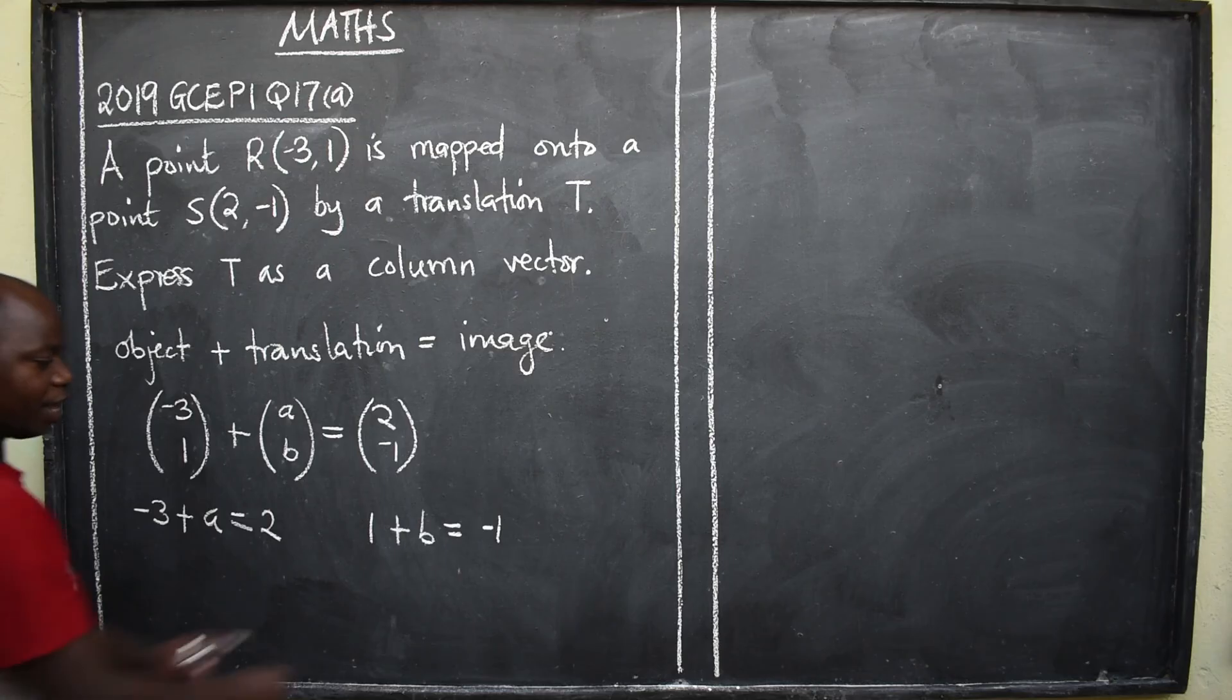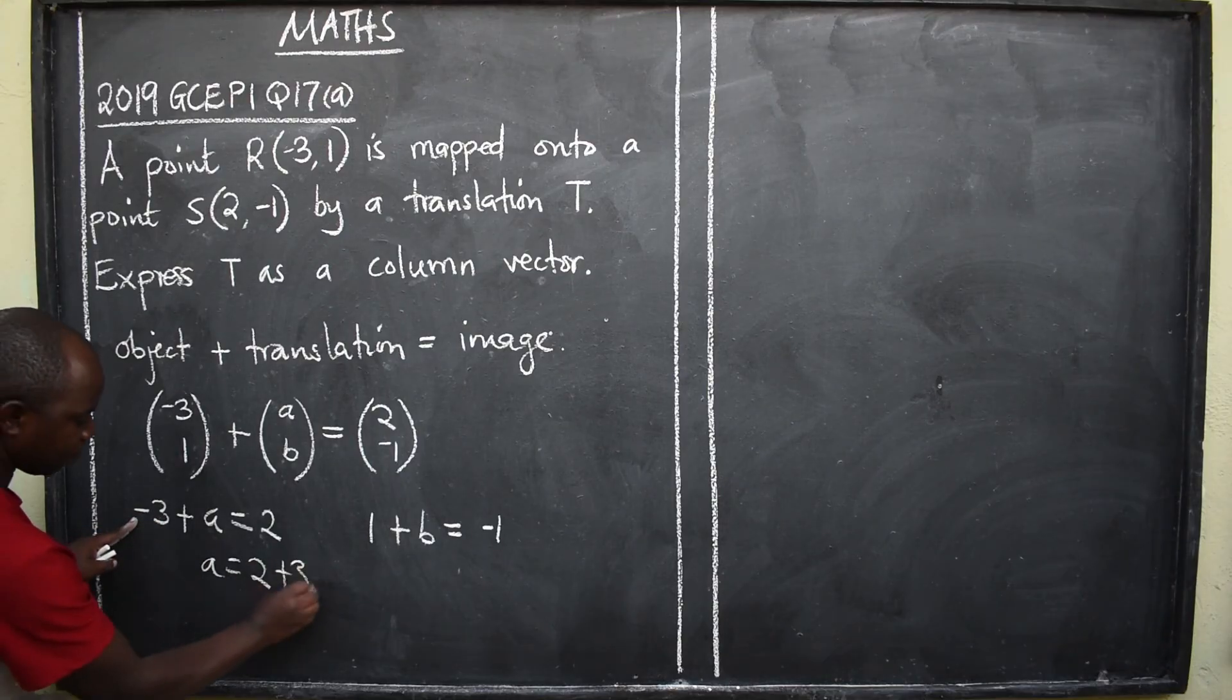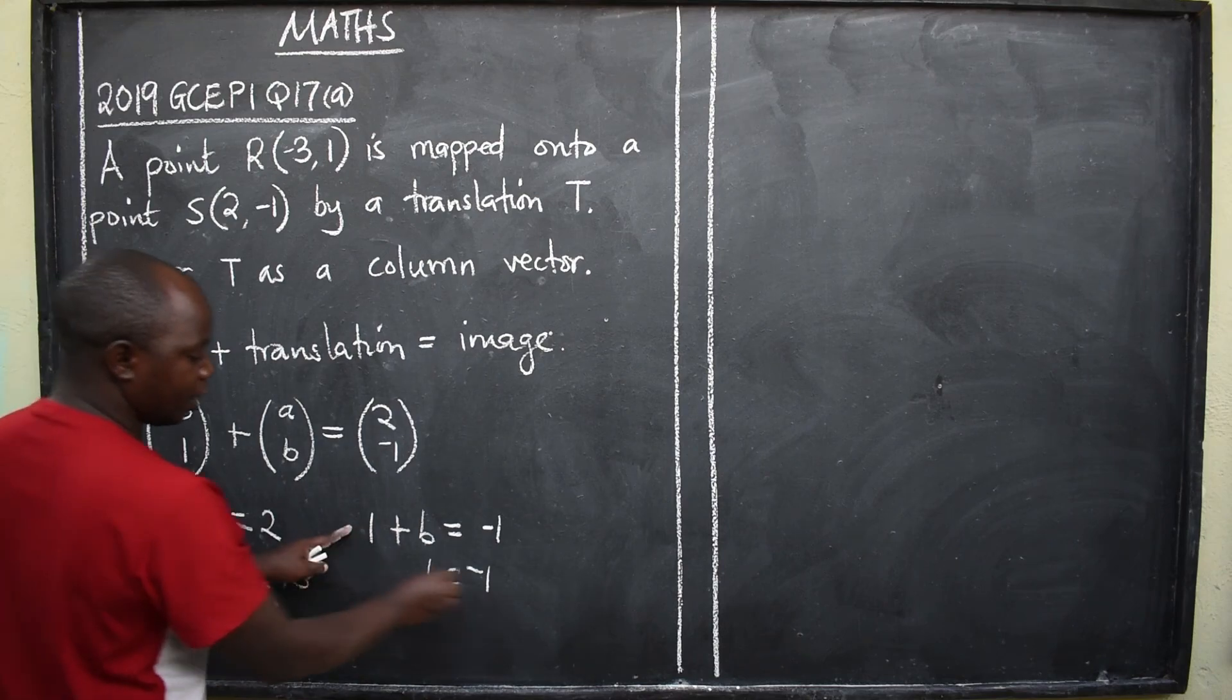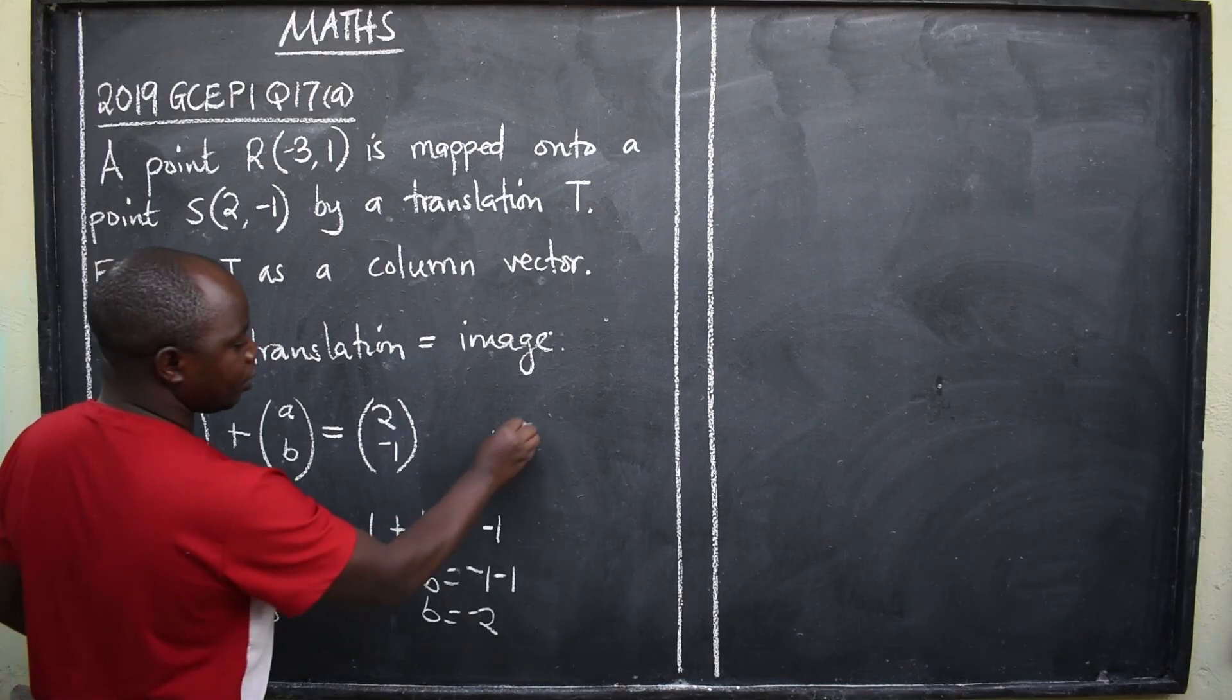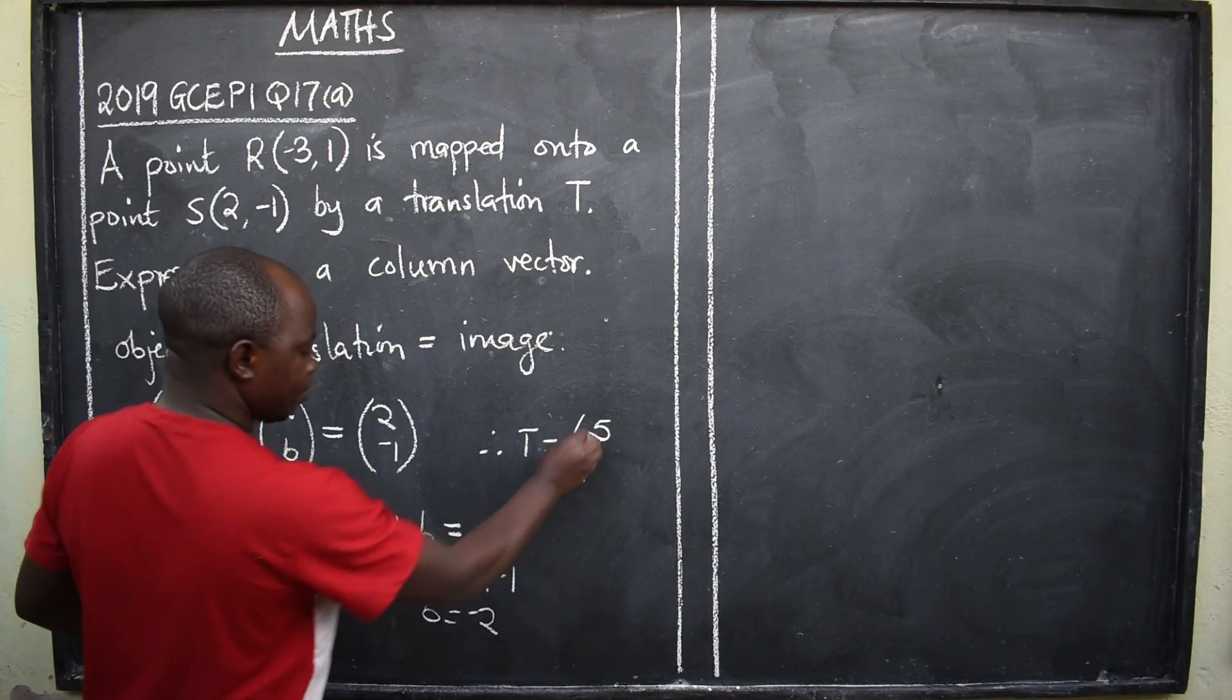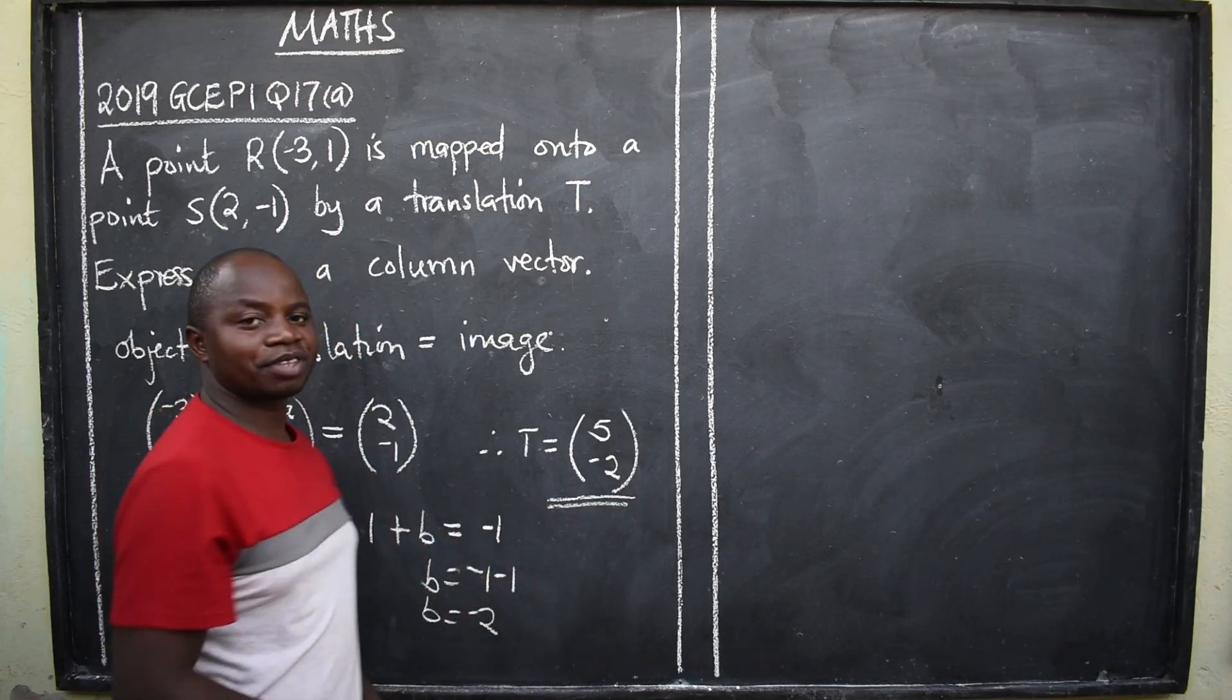So we solve this for A. We solve for B. A will be equal to 2. This is negative 3. It will be positive 3. So our A is 5. On the other side, B will be equal to negative 1. This is positive 1. So it will be negative this side. So our B will be negative 2. Therefore, T translation here would be equal to our A 5, our B negative 2. That is the correct answer.